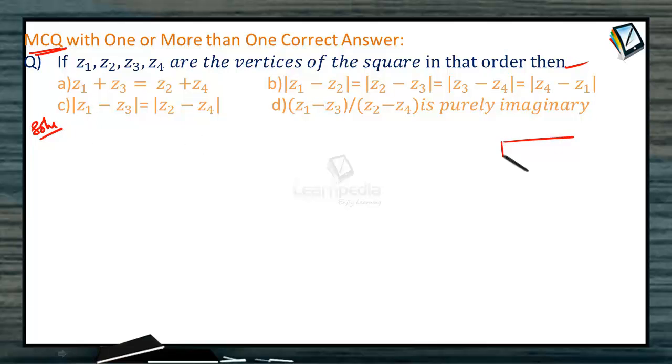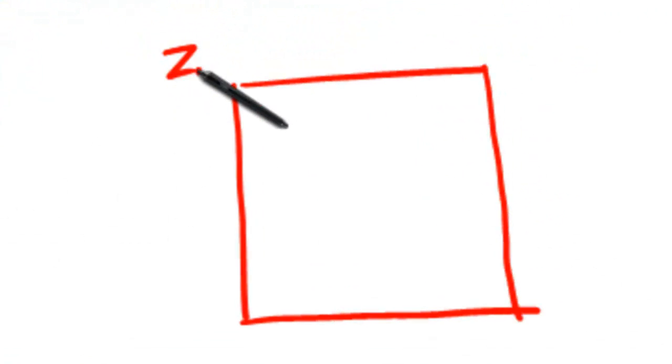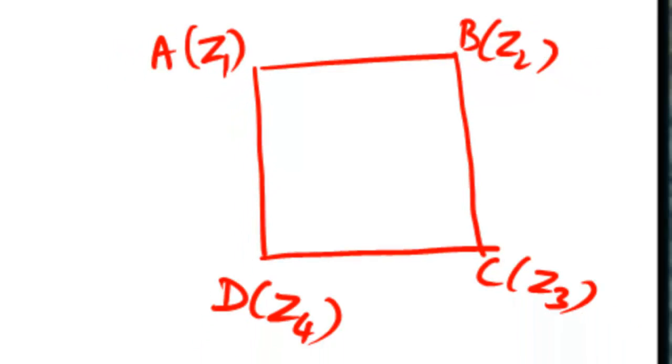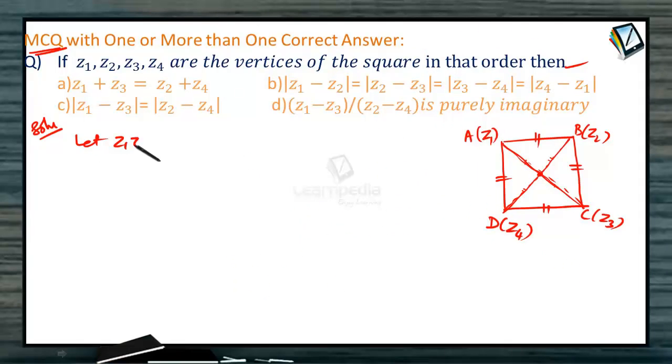Here you are given the diagrammatic explanation for this question. This is a square: Z1 is A, this is B as Z2, C is Z3, and D is Z4. Z1, Z2, Z3 represent the square here. All sides are equal and these diagonals are also equal and perpendicular, and they intersect at the midpoint.